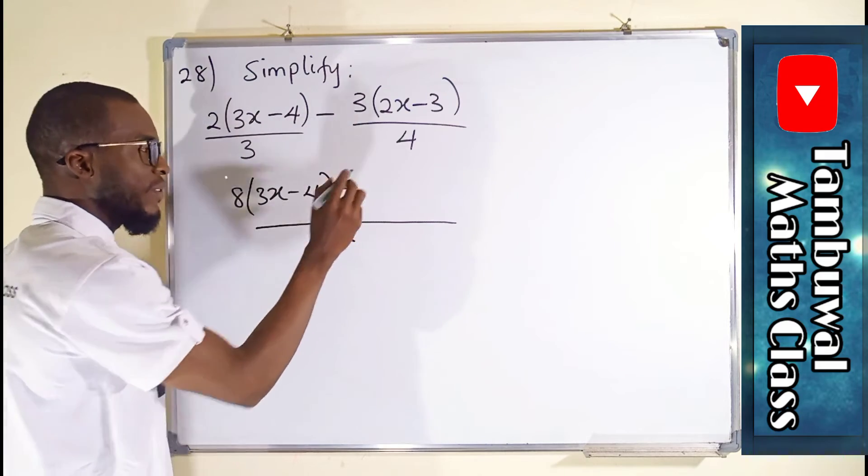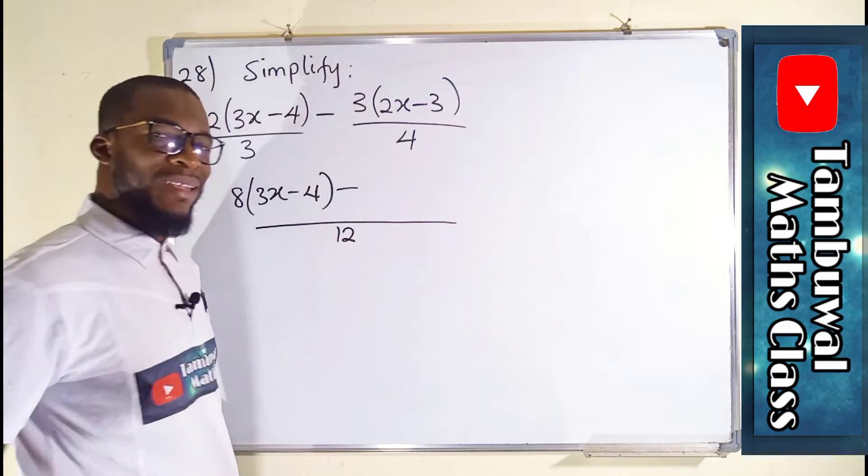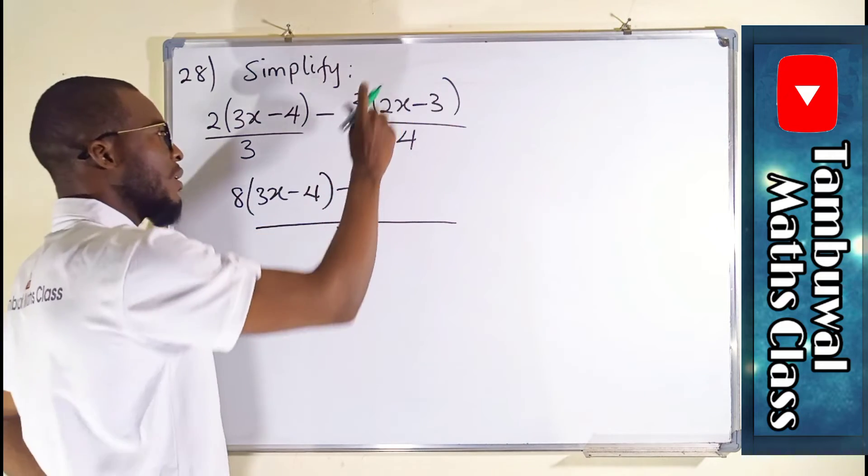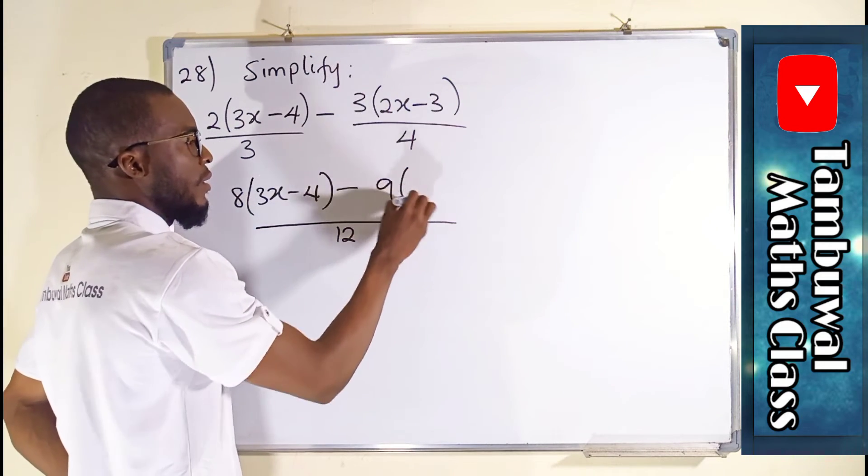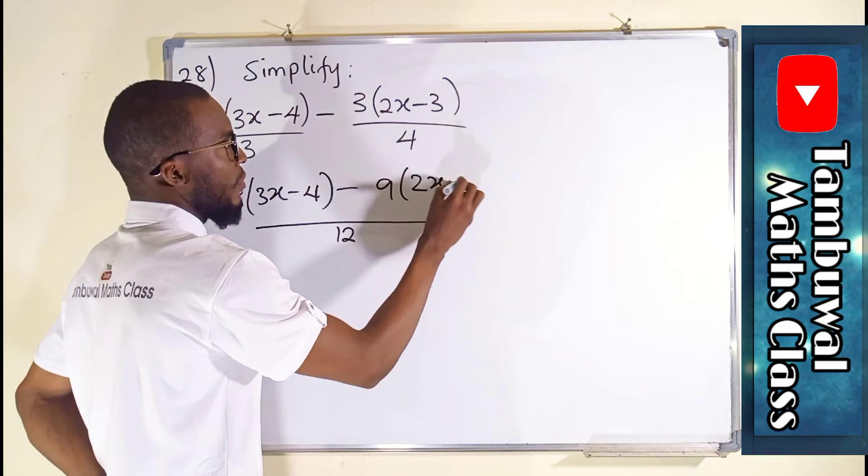Bring your negative sign. 4 can go into 12, 3 times multiplied by the top number. 3 times 3 is 9. We have 2x minus 3.